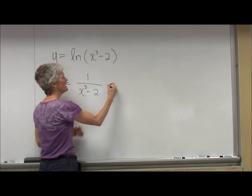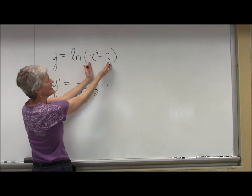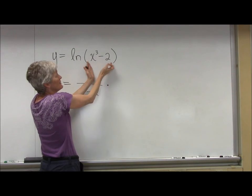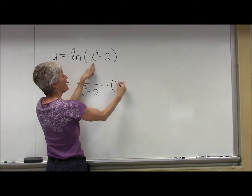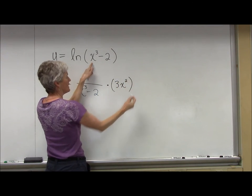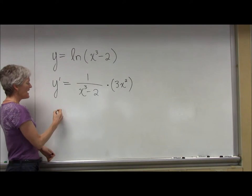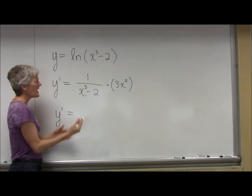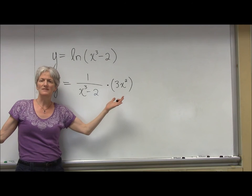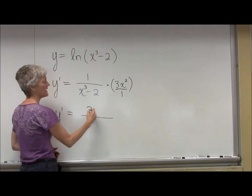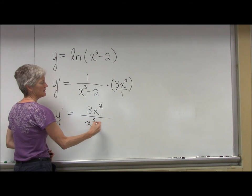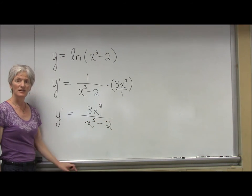But, of course, the chain rule kicks in times the derivative of the inside. This is your inside of your function. So times the derivative of that, which would be 3x squared. And again, I'll often ask you to simplify this. Any ideas for simplifying this? I would just put that in the numerator. Yeah, absolutely. You can just make it one big happy fraction. And there you go. Of course, you're going to resist the temptation. You can't do any dividing there, even though it looks tempting.